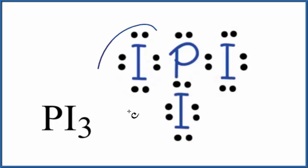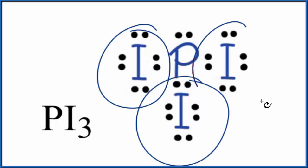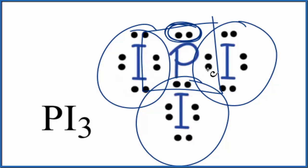You'll notice that we have iodine. Each iodine has eight valence electrons. The octets are full for the iodines, and that phosphorus in the center, it also has eight valence electrons. And two of them right here, those are lone pairs.